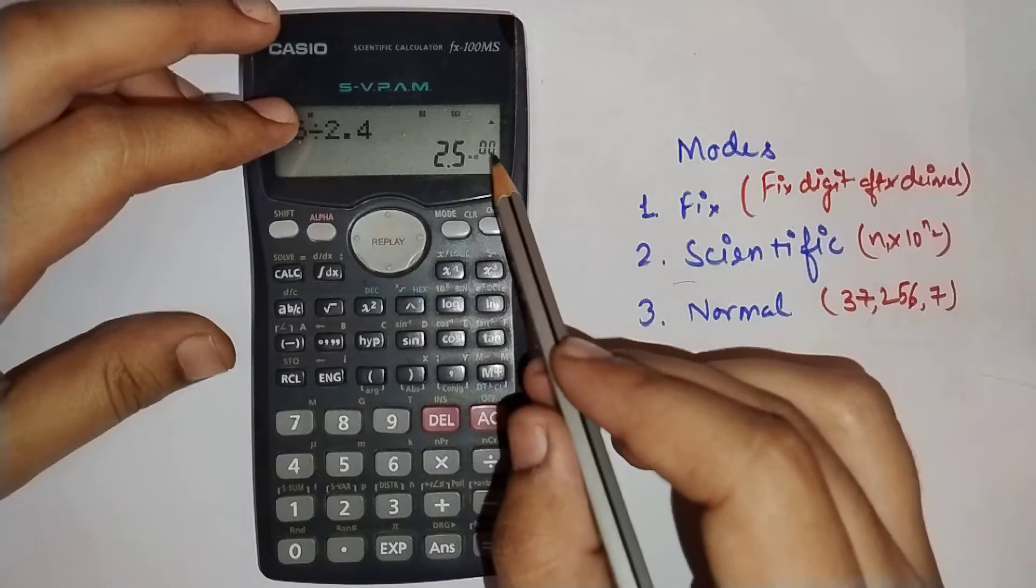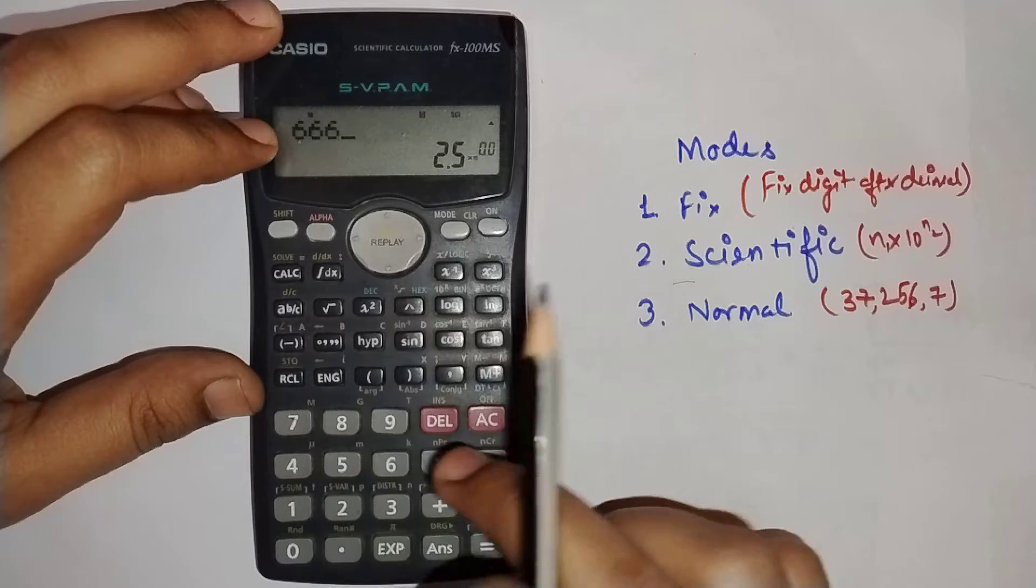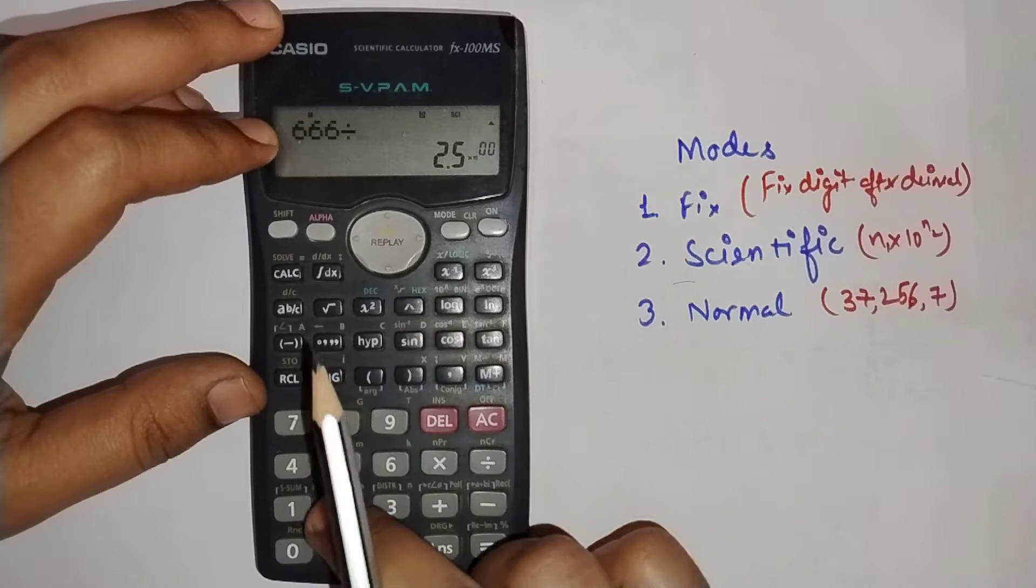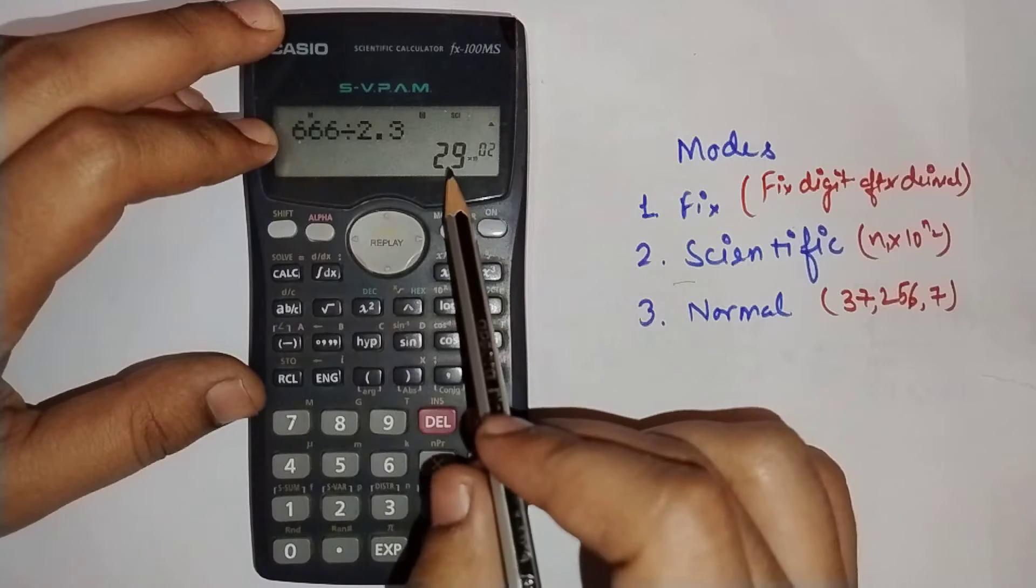If I divide 666 by 2.3, it gives the result times 10 to the power 1 in scientific notation.